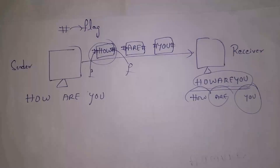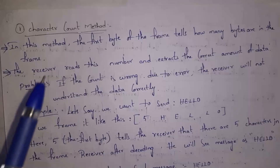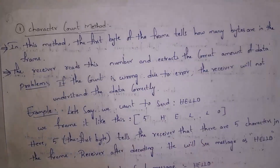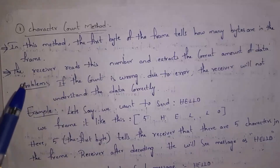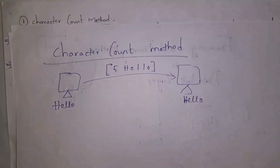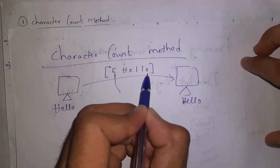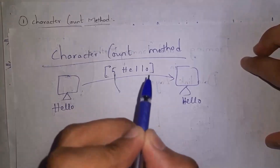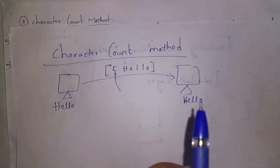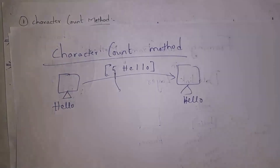If you want to mark the starting point and ending point of your frame, there are various framing methods available. The first one is the Character Count Method. In this method, the first byte of the frame tells how many bytes are present in the frame. The receiver first reads this number and then extracts the correct amount of data. For example, if the sender sends the message 'hello', the character count method converts it to '5 hello', where 5 is the count of the characters.